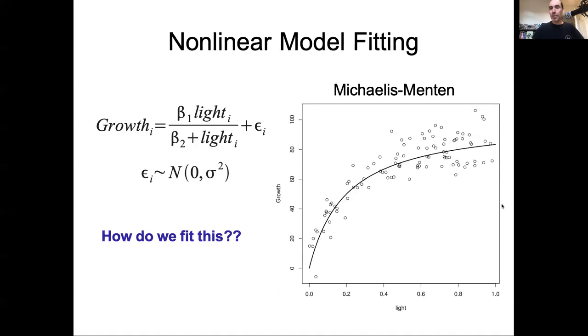But not all of the problems we need to deal with are linear, and as we move on to more complicated models, such as nonlinear models or more mechanistic models, we need a way of fitting those models to data. And sometimes we can do this analytically, we can apply the nuts and bolts of the analytical method for maximum likelihood.